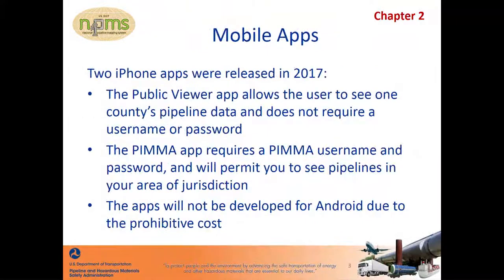We released two new iPhone apps in 2017. If you have a PIMA login, you can use the PIMA app, but you'll only see your own pipelines. The public viewer app doesn't require a password, but will show you one county's pipeline data per session. The next slide shows you how to download these apps. They are not available for Android due to market fragmentation, which drives up the development cost.